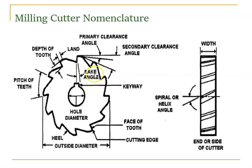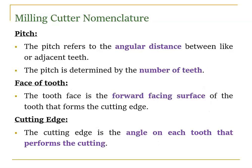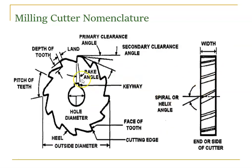The rack angle is the angle formed between the normal direction of rotation, that is, the normal line to the face of the tool, and some inclined line on the face. To see the width of the cutter, you need the end view or side view. The helix angle refers to the inclination of the cutting edge; if the terrain is straight, it is called plain or spiral, and if inclined, it is the helix angle.